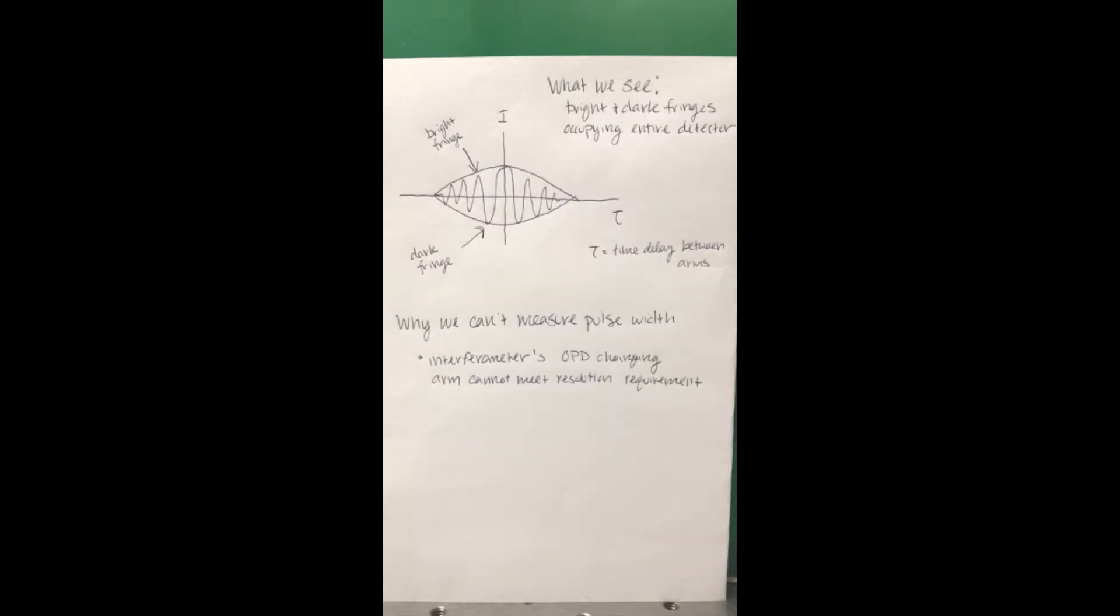Okay, so you might be thinking, you saw the fringes in the blinking of the light, why can you not measure the pulse of the laser? Let me go over what we just saw. What we saw was the bright and dark fringes that occupied the entire detector. You saw it as the blinking light as the detector went through the bright fringes and the dark fringes.